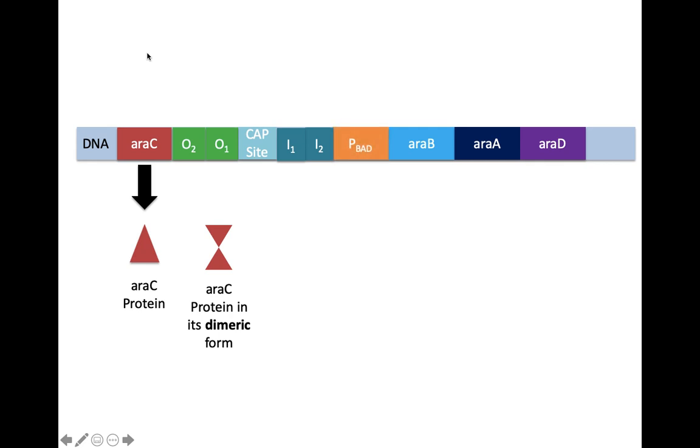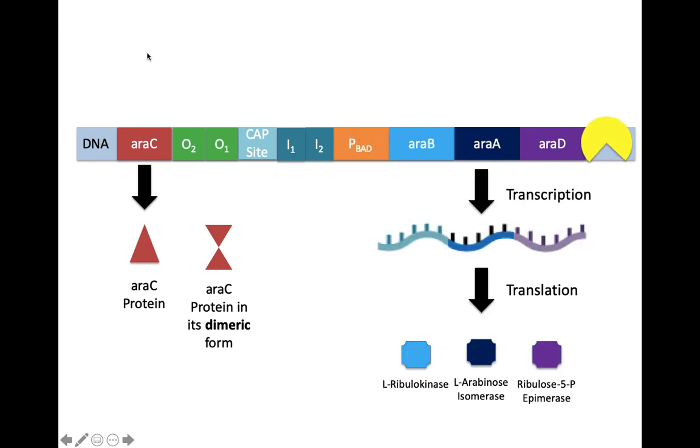The promoter is the DNA sequence that enables the binding of the enzyme RNA polymerase, which will then transcribe the structural genes of the operon: araB, araA, and araD.